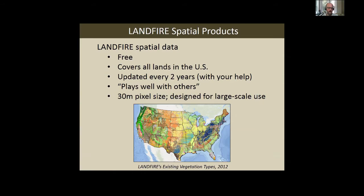Most people, when they hear about Landfire, think of the maps or the spatial data. They're free, they cover all lands — not just Forest Service or Nature Conservancy lands — and they're updated every two years. The data sets play well with other Landfire data sets: the pixels line up, everything's crosswalked already. GIS people know what it's like to mash together data sets from different sources, but within Landfire all the data sets speak to each other. I should also note it's designed for large-scale use. Don't fall prey to 'my favorite pixel syndrome' — going to one pixel where you know the vegetation is wrong and ditching the whole data set. Landfire is designed for watershed-scale work.